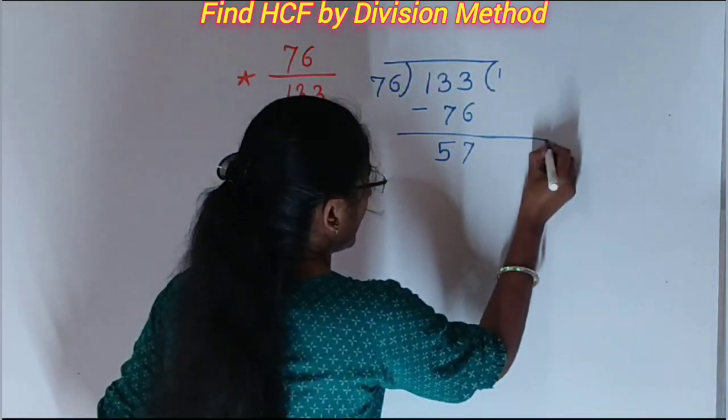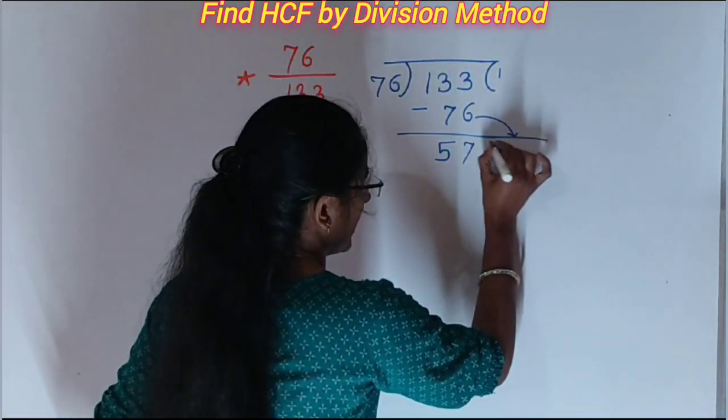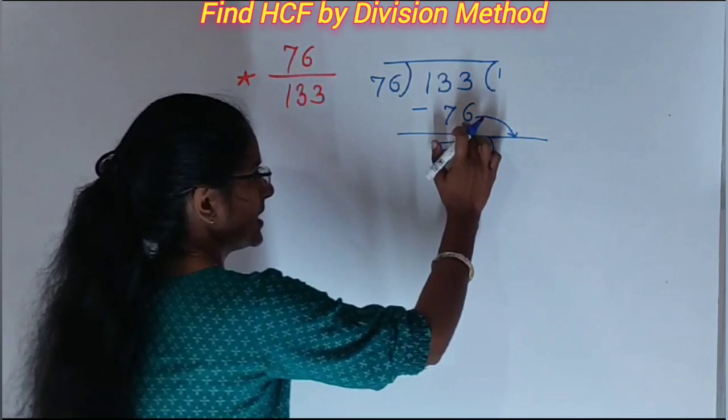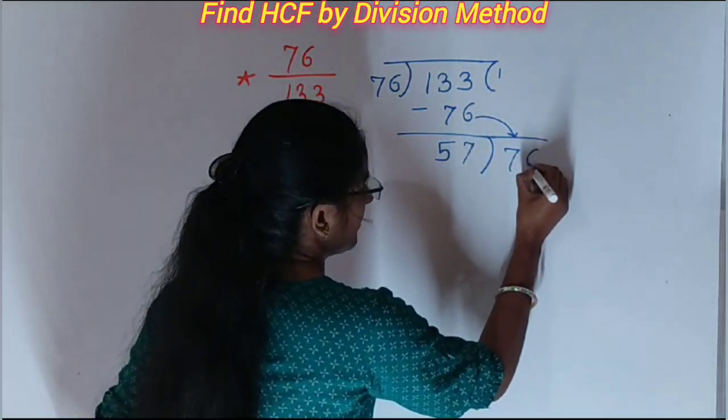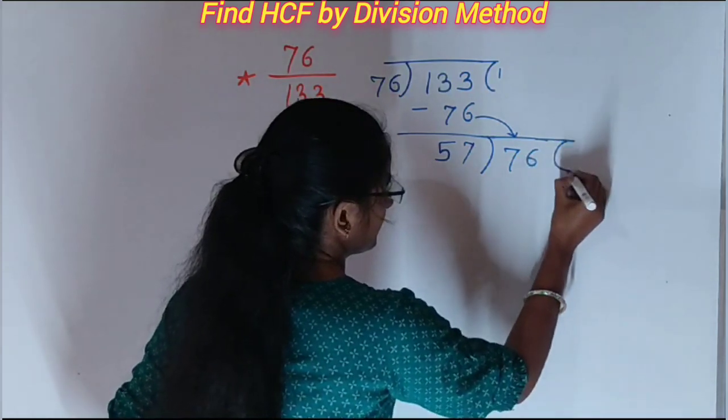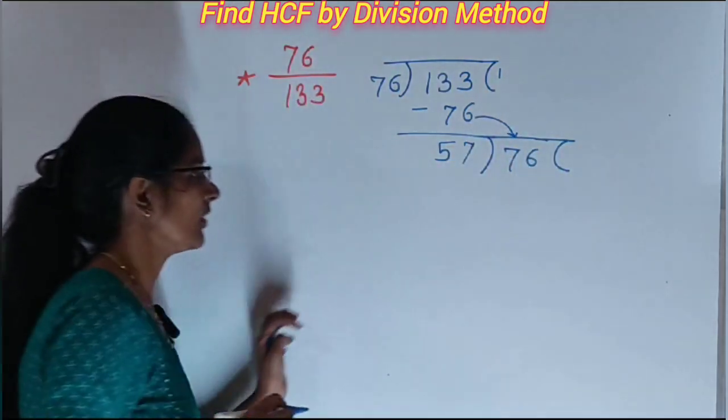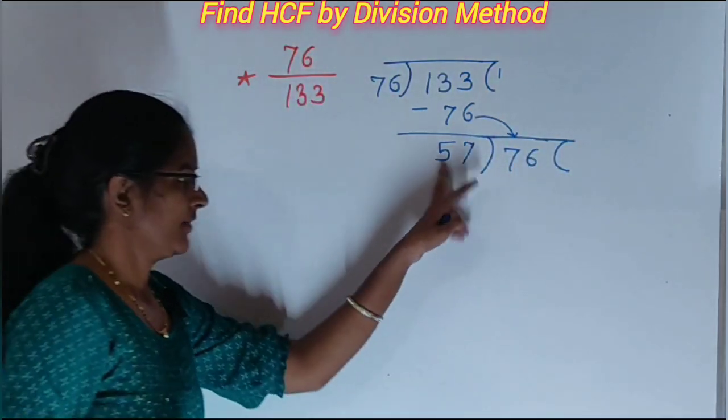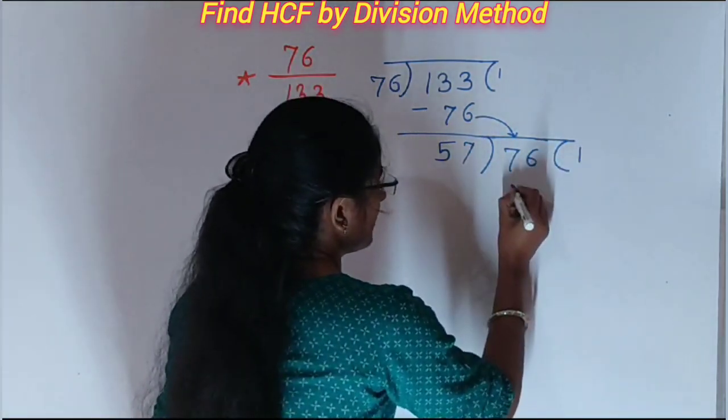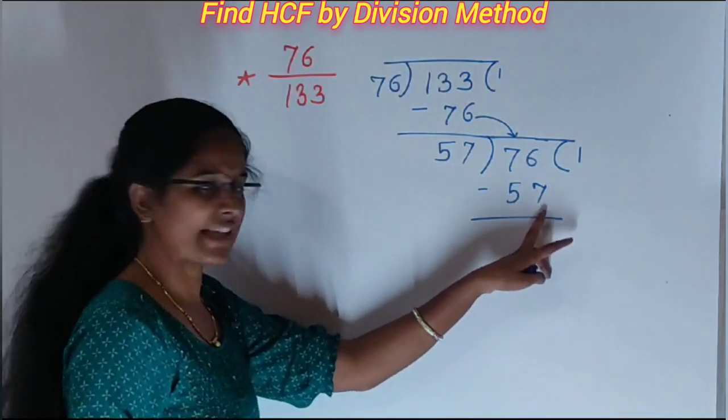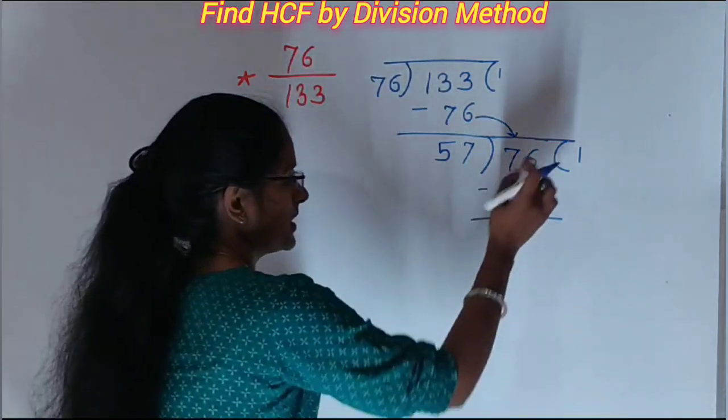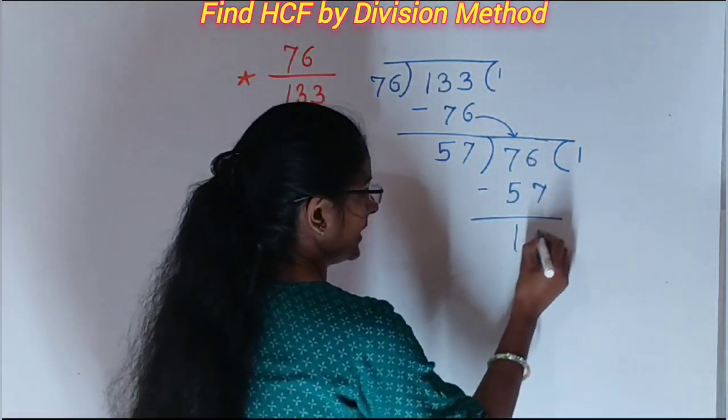Then write this number here and again we divide this number by 57. Write here 76. Again, 57 ones are 57.